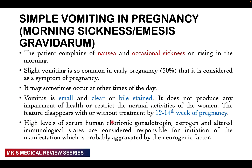Simple vomiting in pregnancy, or morning sickness, also referred to as emesis gravidarum, occurs in the background of a patient who complains of nausea and occasional sickness most commonly in the morning. Slight vomiting is a common symptom of early pregnancy in about 50% of cases and is actually considered a symptom of pregnancy. It may occur at other times of the day, and often the vomitus is small in amount, clear, or bile-stained. It doesn't produce any impairment of health and is meant to disappear with or without treatment at about 12 to 14 weeks.